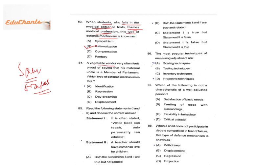Question 84: a vegetable vendor feels very proud saying his maternal uncle is a Member of Parliament. This is the defense mechanism of identification — he wants to be identified by the name or fame of his maternal uncle.